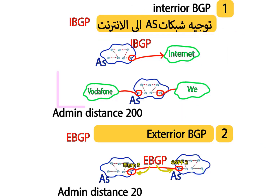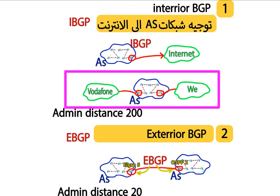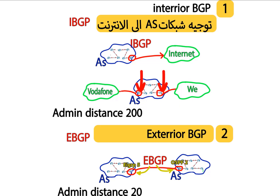The two routers each direct me to a different ISP — one to WEI and the other to Vodafone. With two company branches connected to each other, each branch has an iBGP router. One iBGP router directs to WEI and the second iBGP router in the other branch directs to Vodafone. The administrative distance of iBGP is 200.